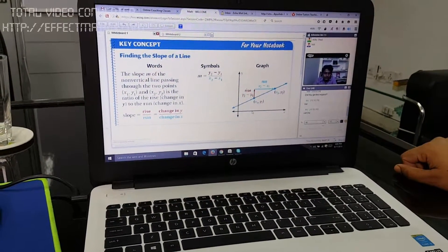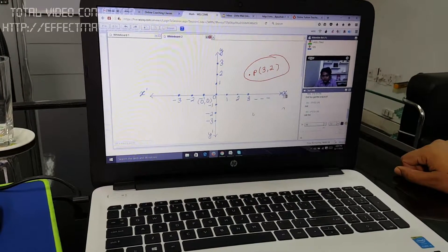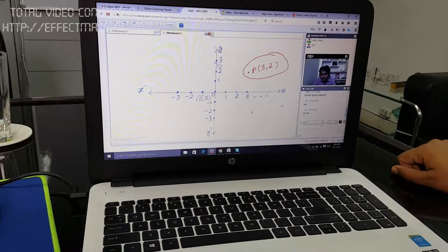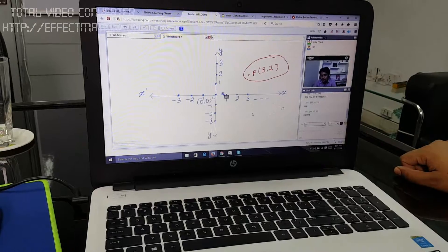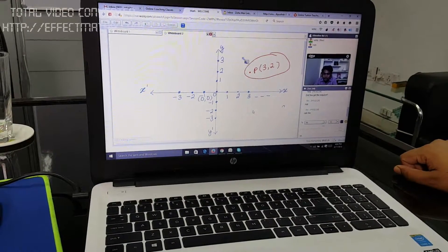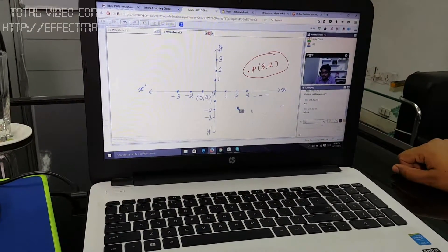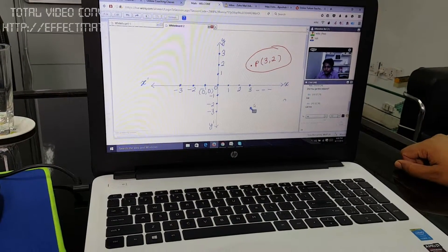Let me just tell you again. If you notice this coordinate system, this is the first quadrant, where both the axes are positive. We consider it to be the first quadrant. Then if you move in the counterclockwise direction, we have first, second, third, and fourth quadrant.